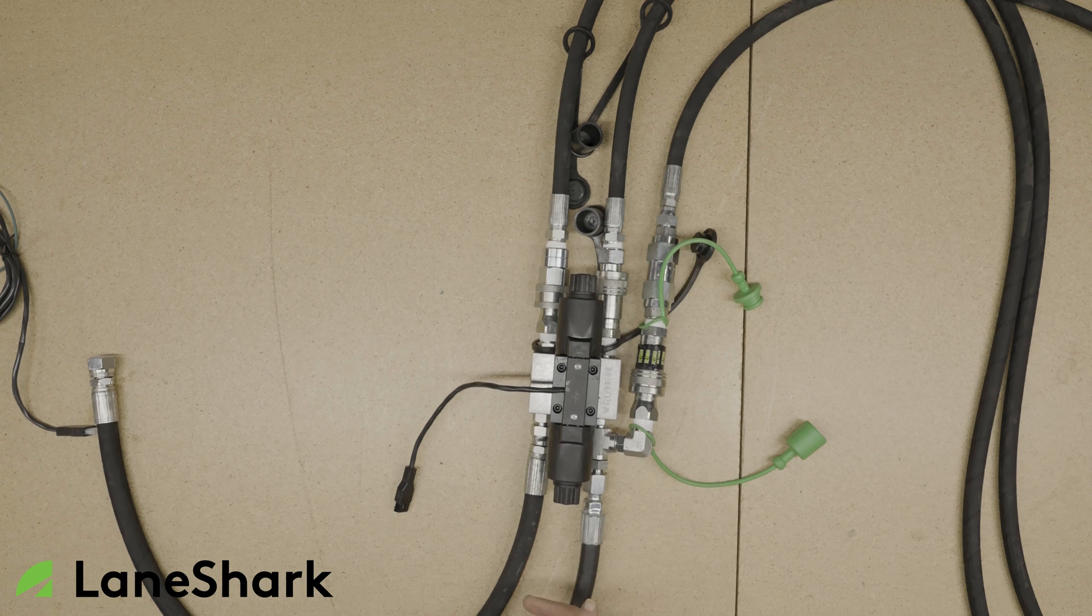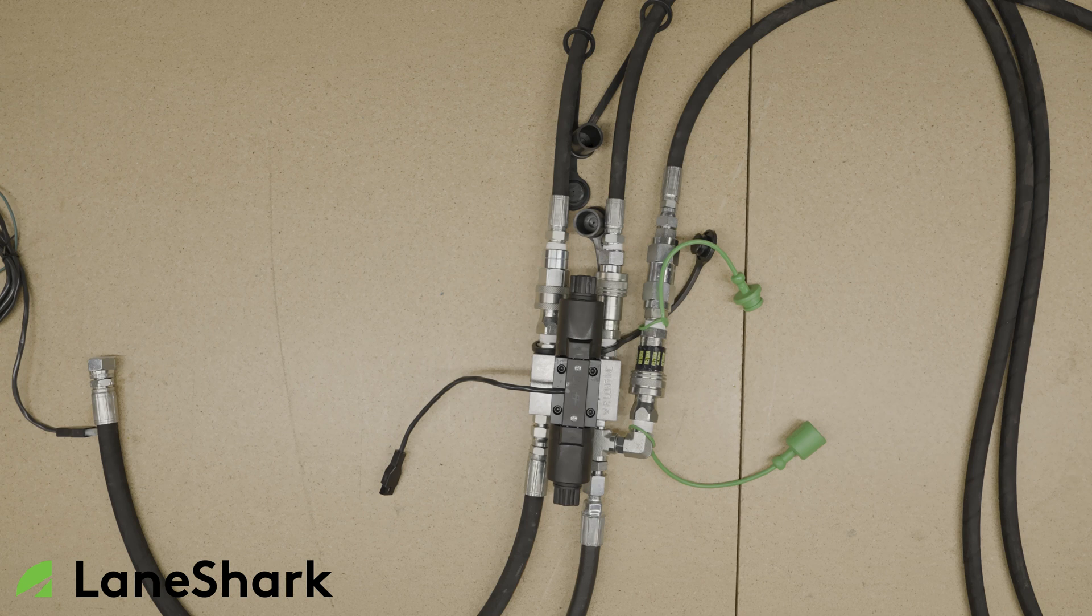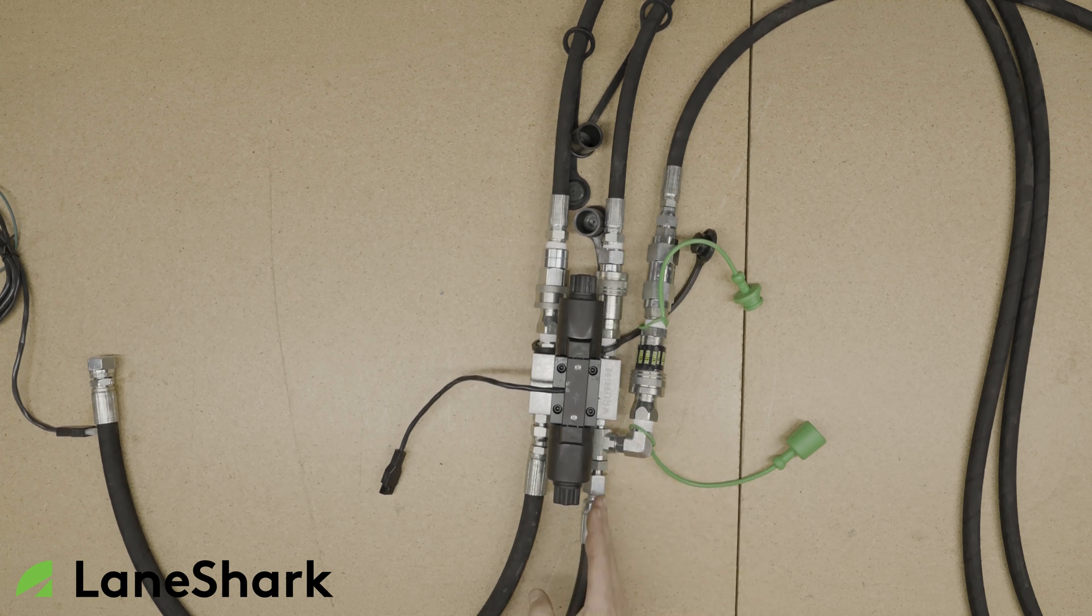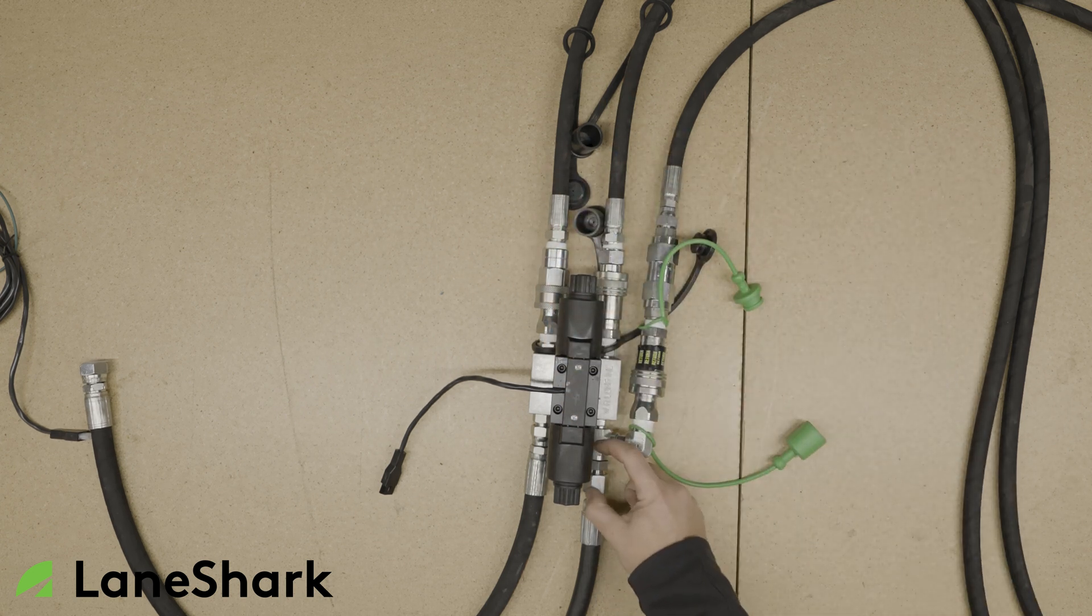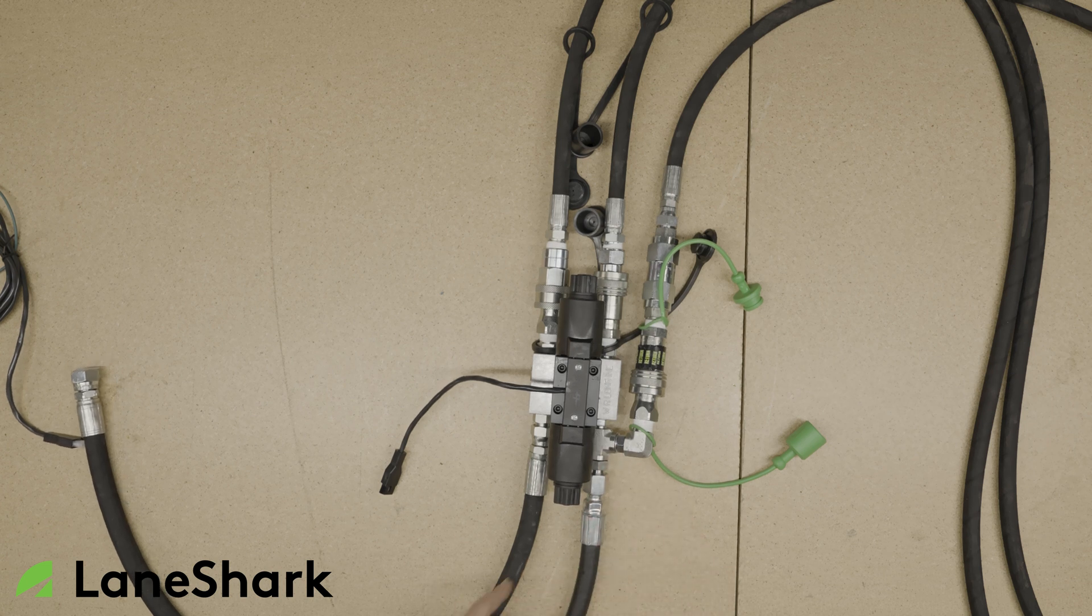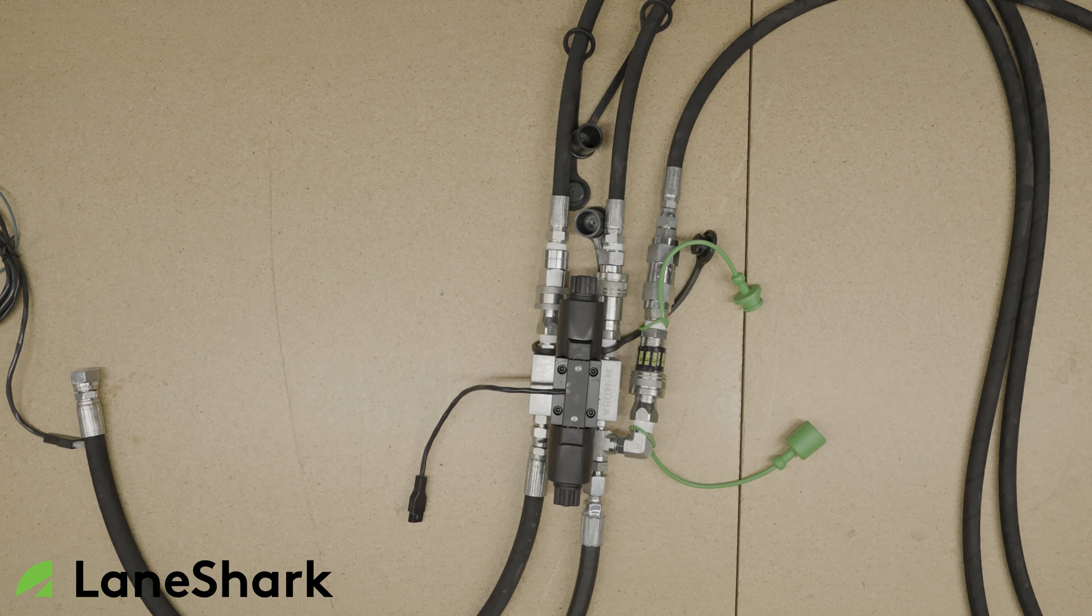If these are reversed, when you go to start the Lane Shark, the motor will spin for a second, and it'll lock up because it's deadheading. What's happening is the fluid is coming through here, going to the motor, coming back, and it's deadheading right here. So we can't have that. So if that happens, you just reverse the lines, pressure's coming through here, coming back in this way, that'll solve that problem.